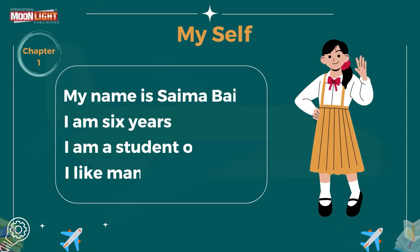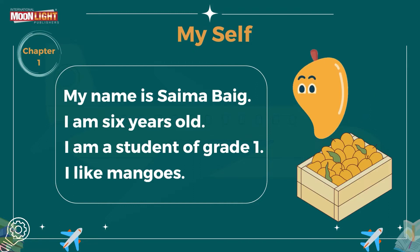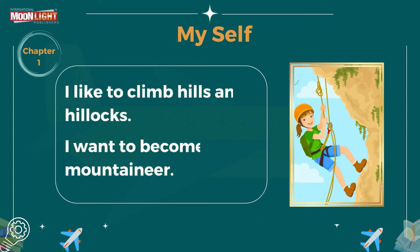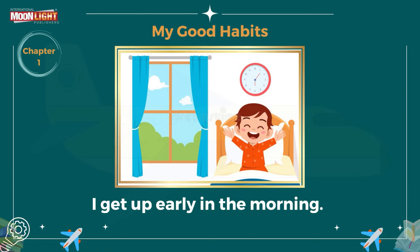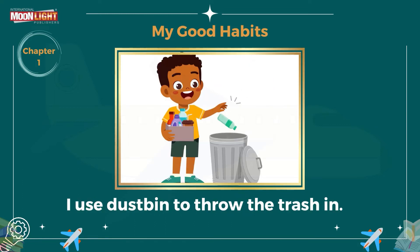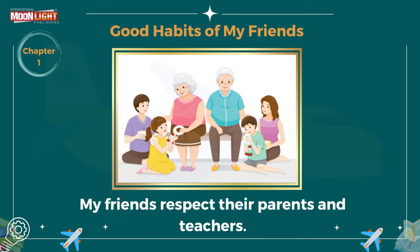Now Saima will introduce herself. My name is Saima, I am six years old, I am a student of Grade 1. I like mangoes, I like to climb hills and hillocks, and I want to become a mountaineer. My good habits: I respect and obey my elders, I get up early in the morning, I use the dustbin for trash, and I share my toys and food with others.